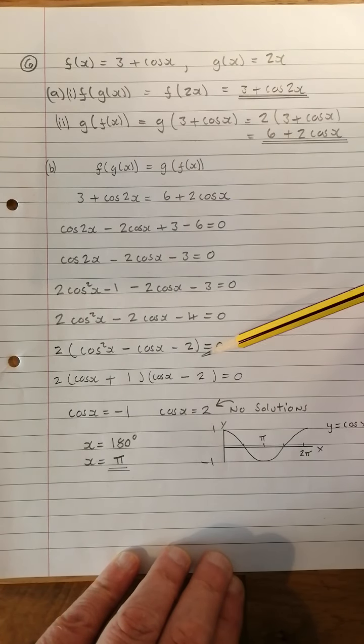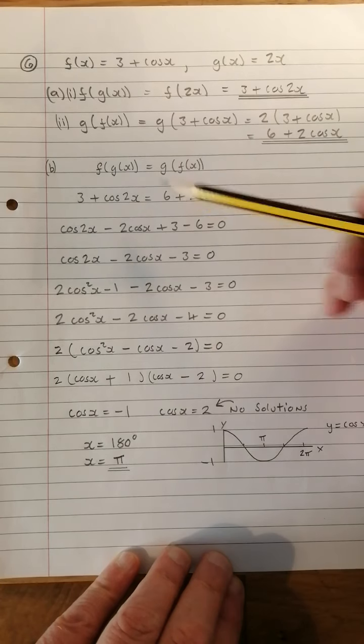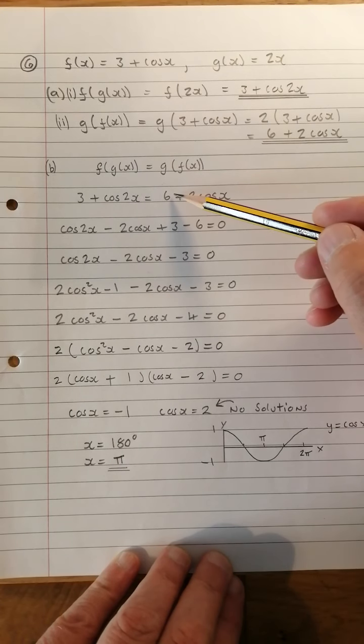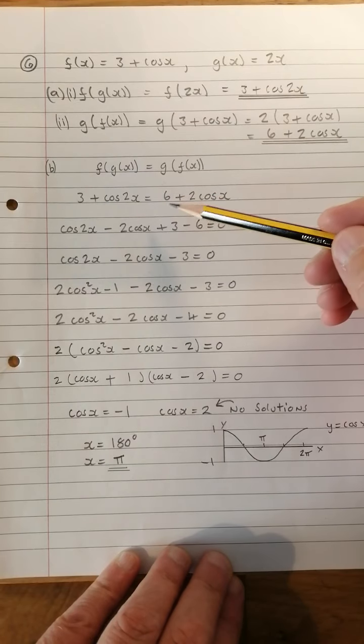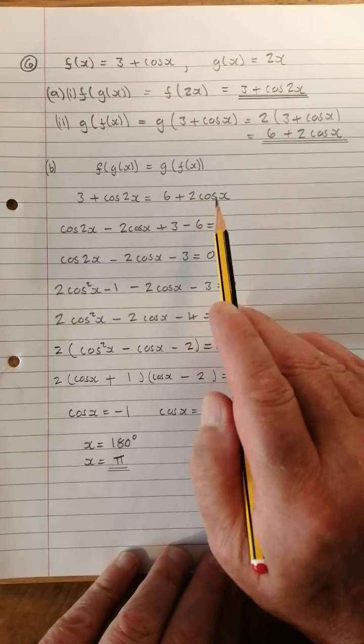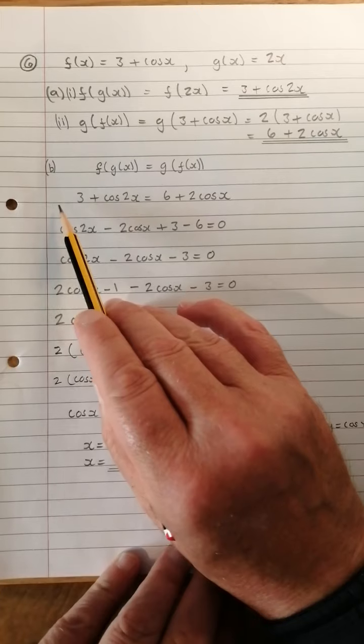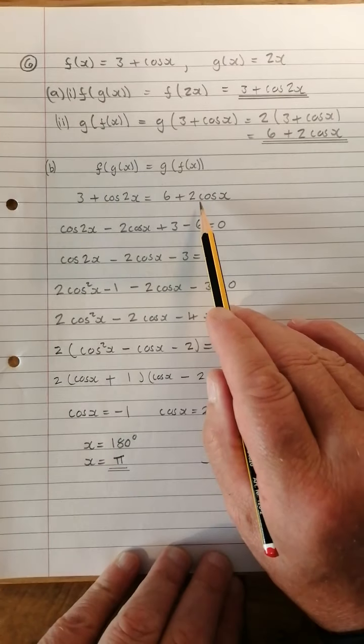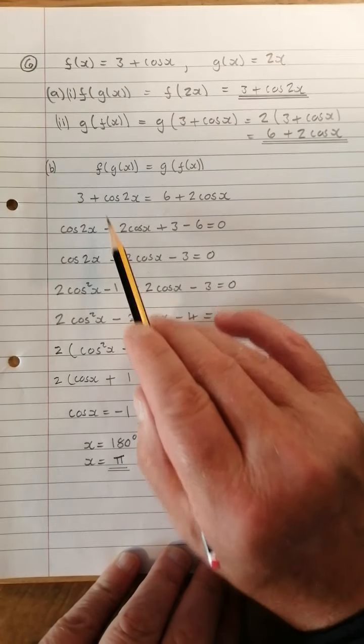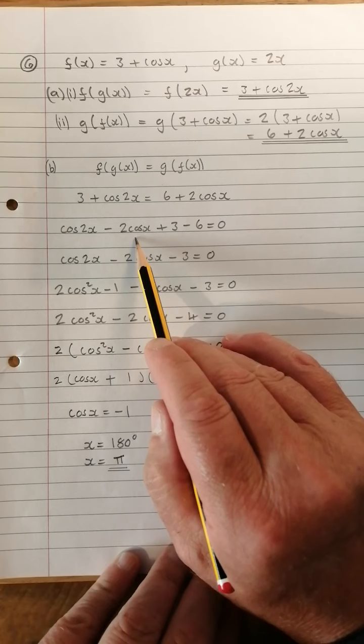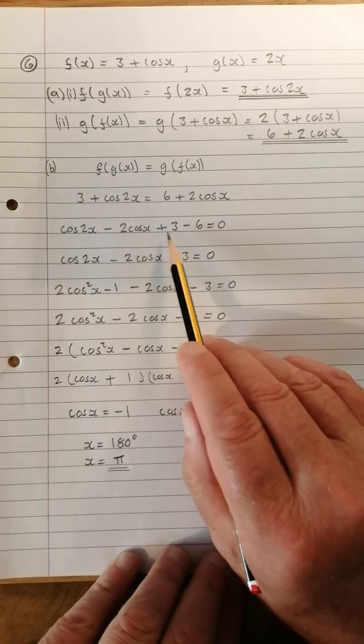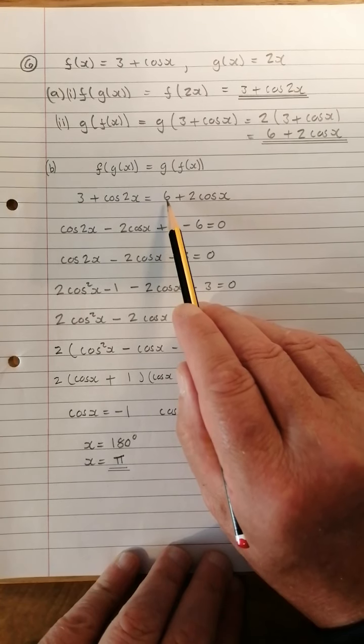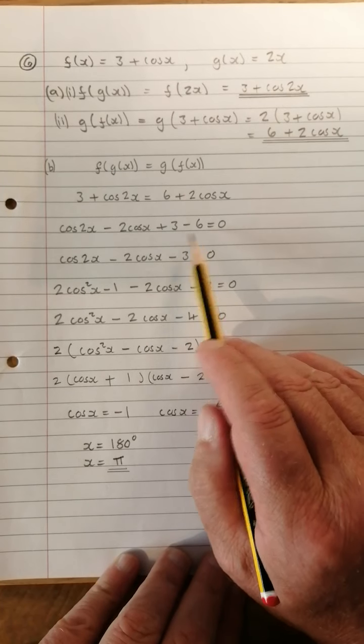So we have 3 plus cos 2x equals 6 plus 2 cos x. Move everything over to the left-hand side, so the cos 2x goes up to the front. The plus 2 cos x becomes minus 2 cos x, and then we have the 3 and take 6. 3 was already there so it doesn't change its sign, the 6 becomes minus 6.